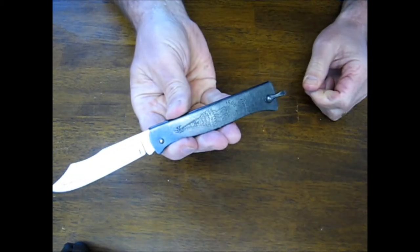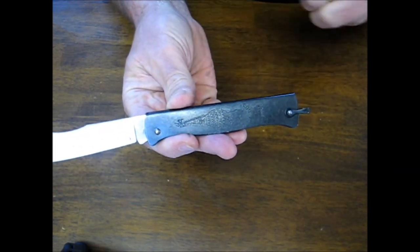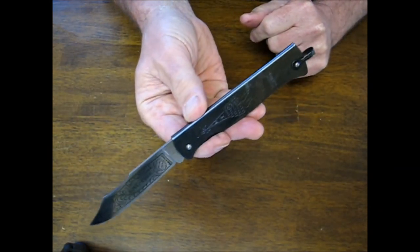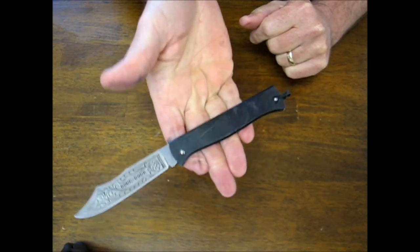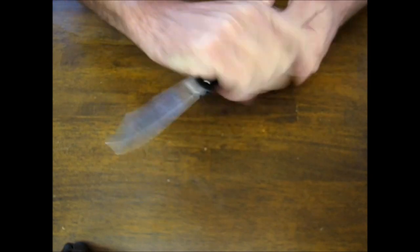The handle length measures in at 4 3/8 inches, and the handle is ferro black and stainless steel. It weighs in at 2.4 ounces. It's got a nice balance to it. You get a good four-finger grip either way on it.